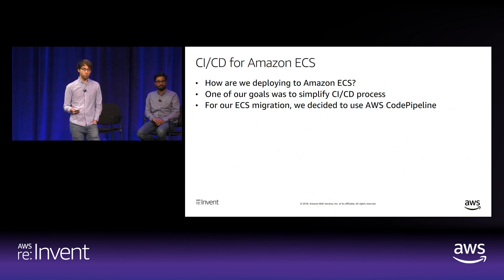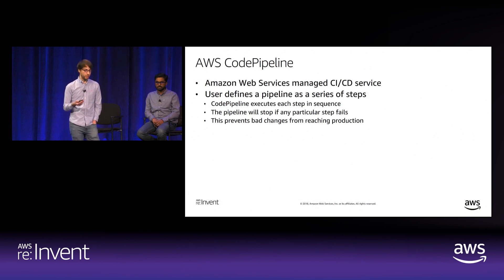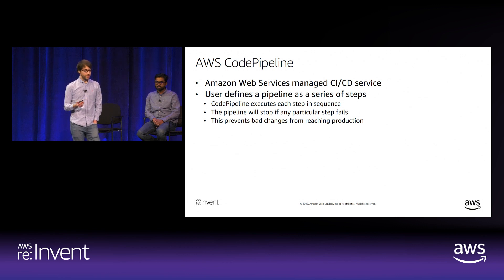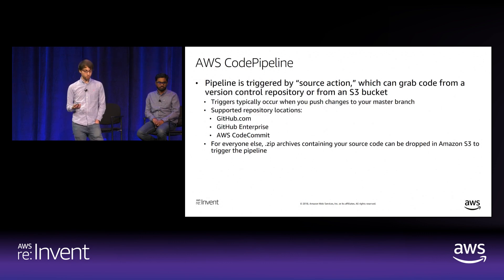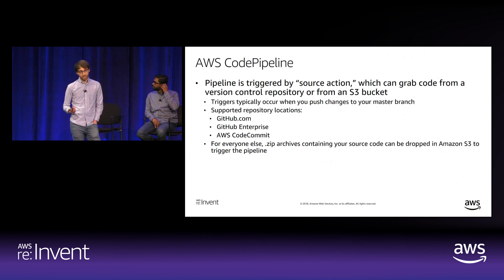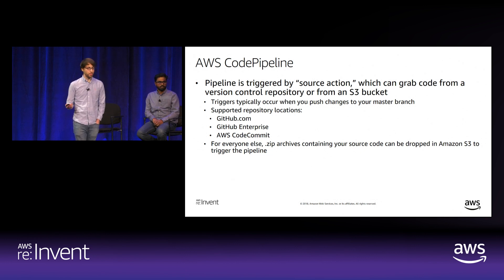We decided to use AWS CodePipeline to deploy these microservices. CodePipeline is AWS's managed CI/CD service where users define pipelines as a series of steps, and CodePipeline executes each in sequence. A pipeline will stop if any step fails, preventing bad changes from reaching production. A pipeline is triggered by a source action that grabs code from a version control repository or S3. Supported repositories include GitHub.com, GitHub Enterprise, Bitbucket, and CodeCommit. If none of those are used, zip archives in S3 can trigger the pipeline.